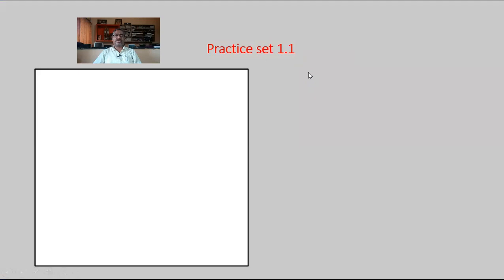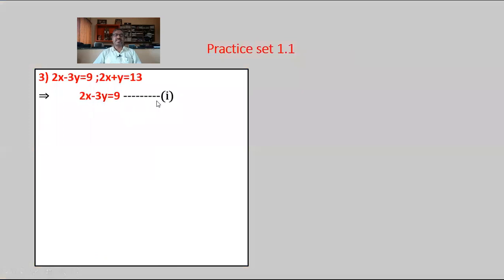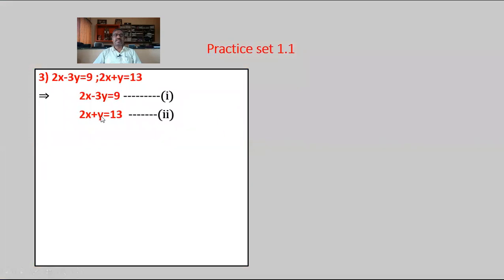Problem number 3 — simultaneous equations given: 2x minus 3y is equal to 9 — equation number 1; 2x plus y is equal to 13 — equation number 2. Observe the coefficients of x and y.